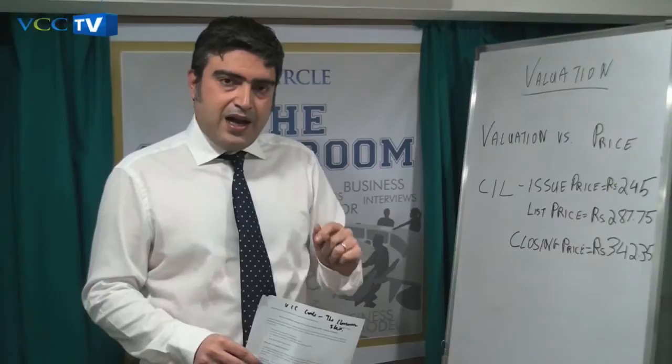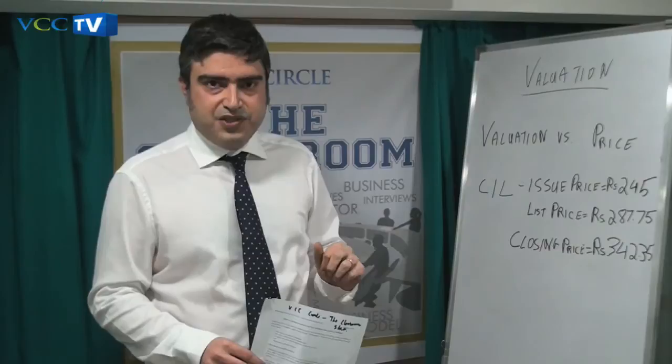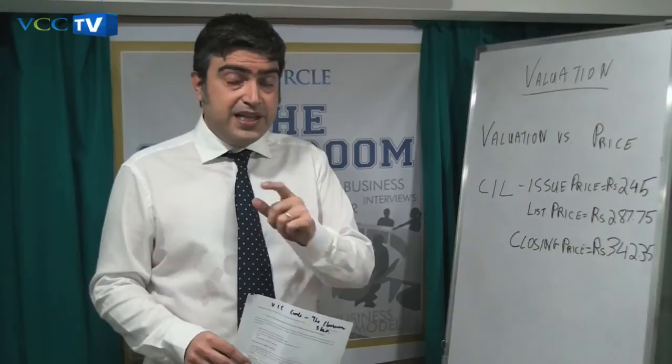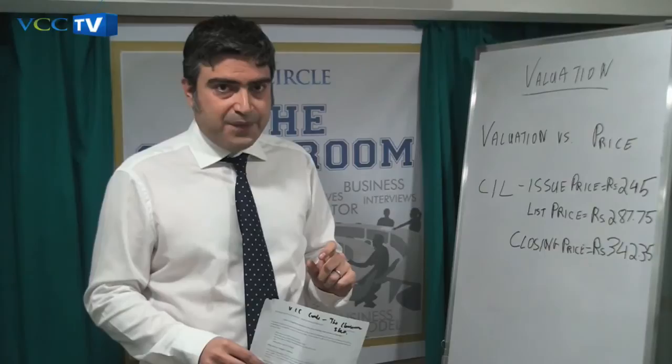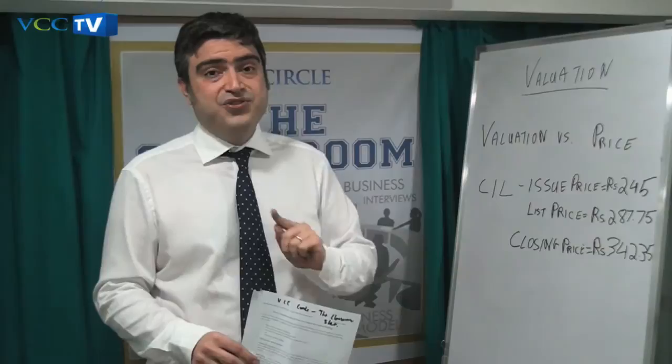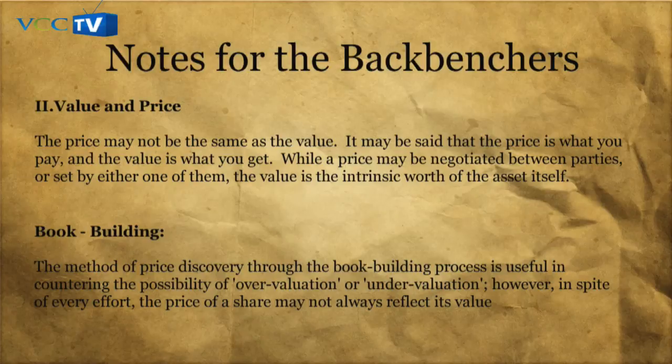You could also have problems of undervaluation. An example of this was recently when Shell India made a preferential allotment of shares to its parent. The preferential allotment was made at par. However, the income tax authorities raised an objection, saying that how could you issue the shares at par? The shares should have been valued at more than that, and hence the price that should have been paid was far higher.